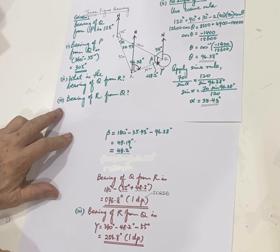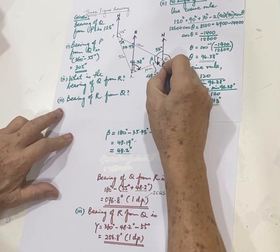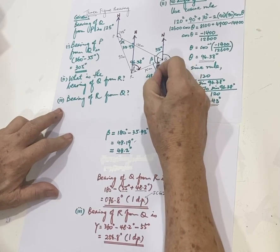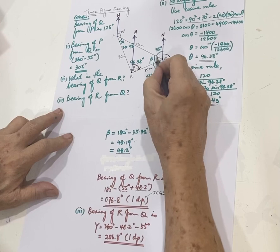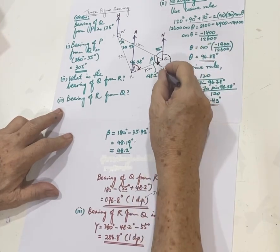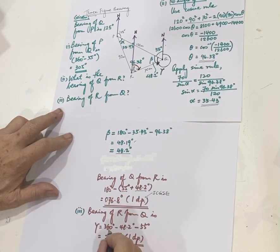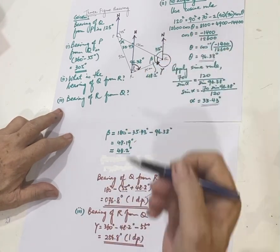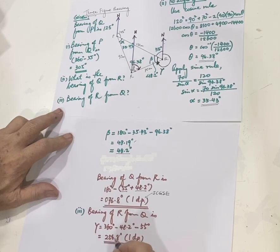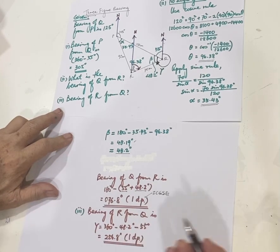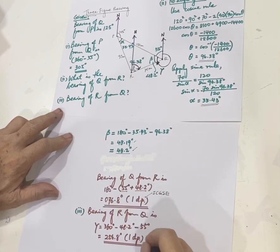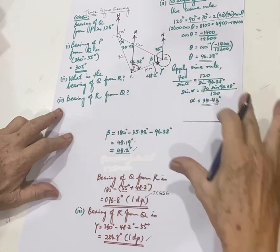Okay, with that, then the last part bearing of R from Q. So R from Q, you stop at Q, all right? And then you come this way until this only. So can I call that gamma? So gamma is 360 minus 55 minus 48.2 and I get 256.8, which is definitely one decimal point because I kept beta at one decimal point and I would have gotten full marks for this.